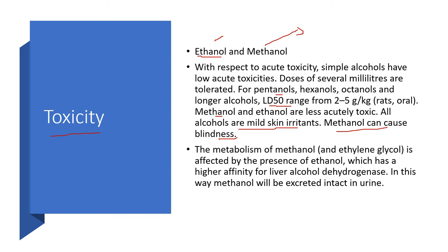In some areas where alcohol is manufactured illegally, there might be traces of methanol that have caused people to die or go blind. The metabolism of methanol is affected by the presence of ethanol, which has a higher affinity for liver alcohol dehydrogenase. In the liver, this enzyme converts alcohol into simpler molecules, and once metabolized, it is excreted in the urine.